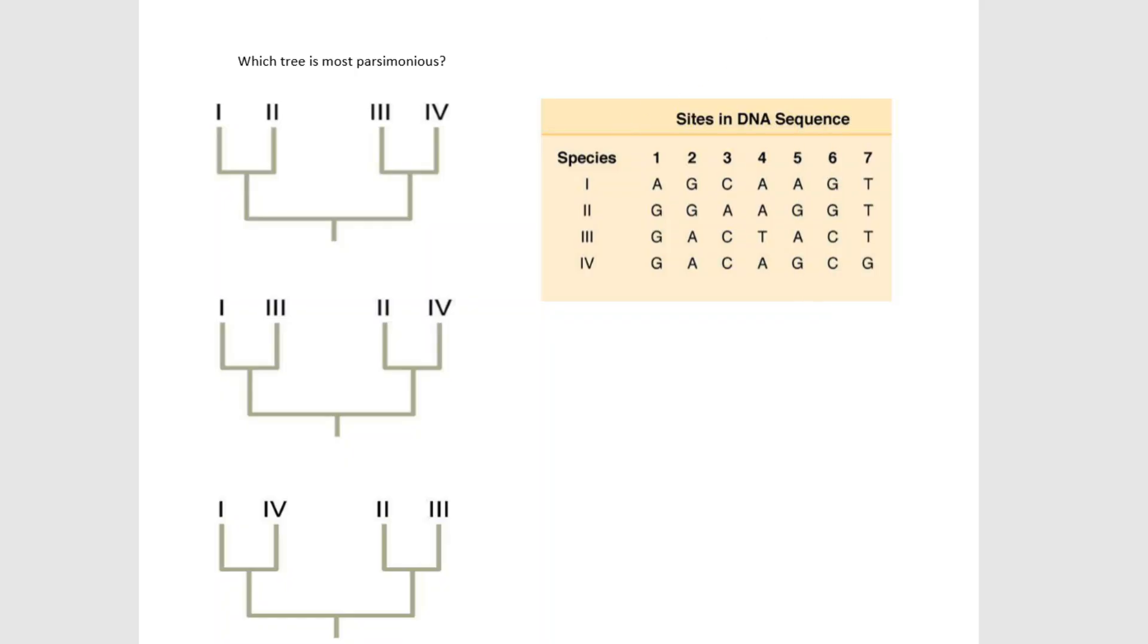So what I want to do is first start out with our first site, so site 1, and I'm going to map this onto the tree. So what we see here is that almost all of these are the same, G, G, and G. So I'm not going to map those onto the tree, I'm going to just assume that's the ancestral state, and instead I'm going to look at species 1. So species 1 has an A instead, and so we can mark that here on the tree, and we can write G to A.